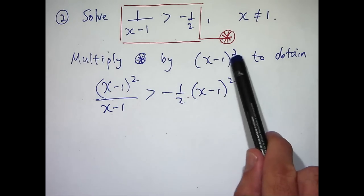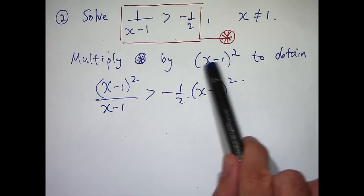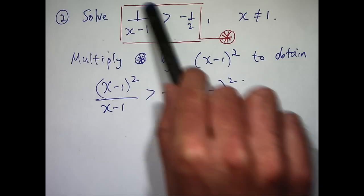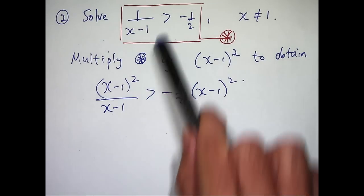If I didn't have a square here, then I'd have to worry about when is x minus 1 positive and when is it negative. So if you have a square, then you can multiply both sides and keep the same inequality.